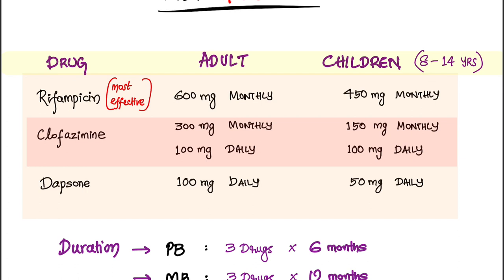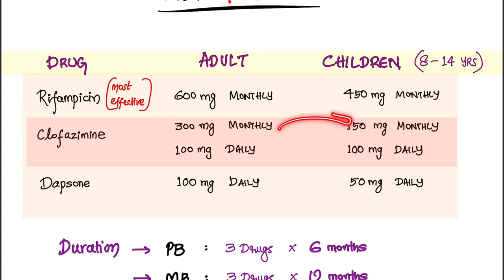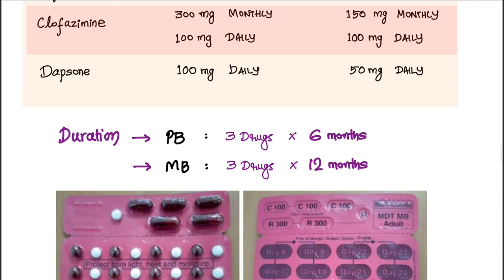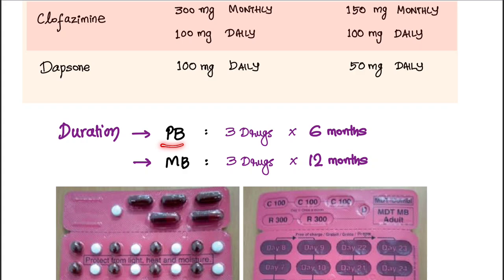Clofazimine is given both daily and monthly: 300 mg monthly and 100 mg daily for adults; for children, 150 mg is given monthly and 100 mg daily. Dapsone 100 mg daily is given for adults and 50 mg daily for children.